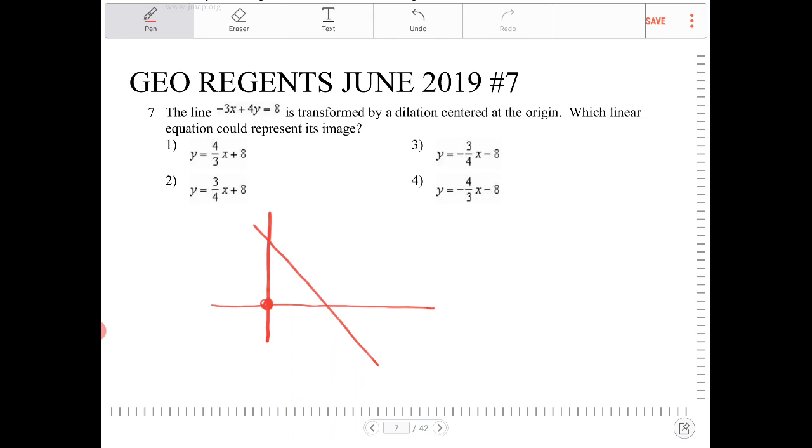If we dilate this triangle over that point, what will end up happening is we're going to end up with something that looks like this.